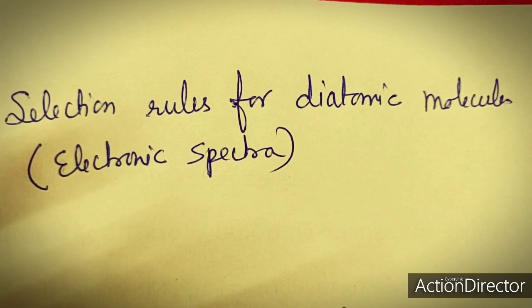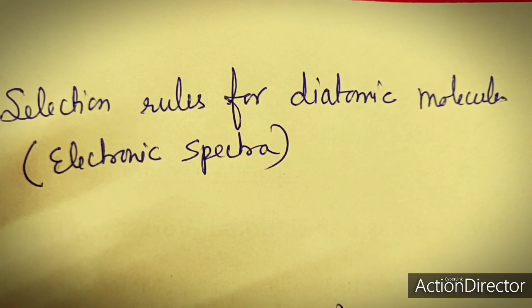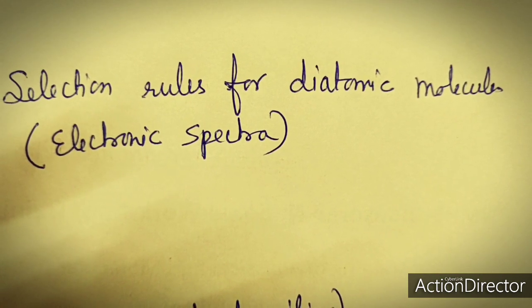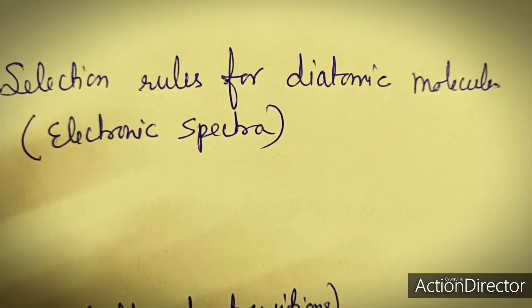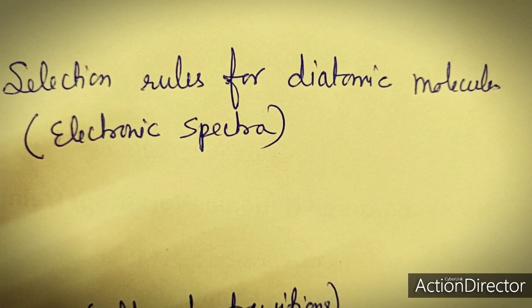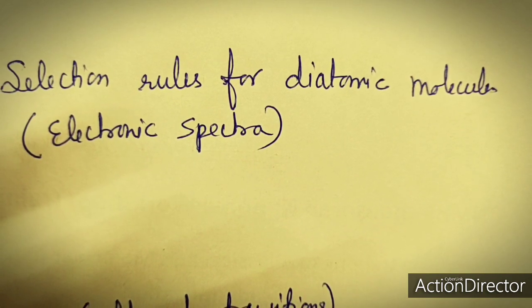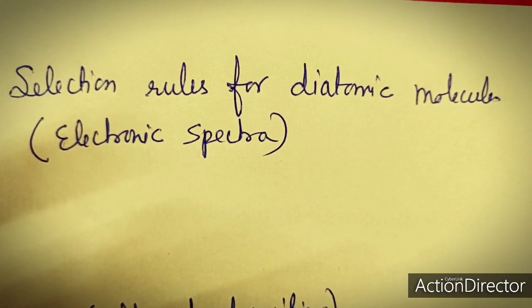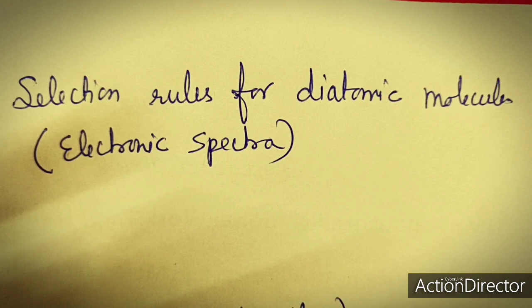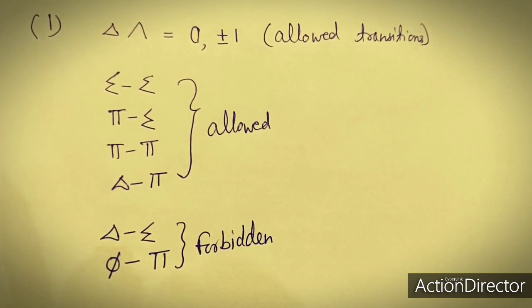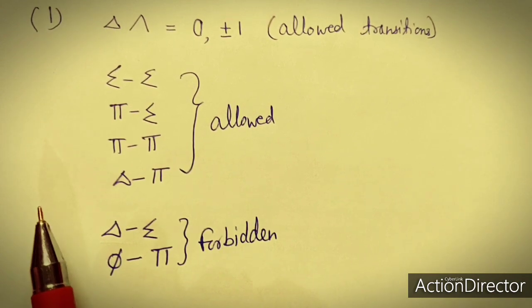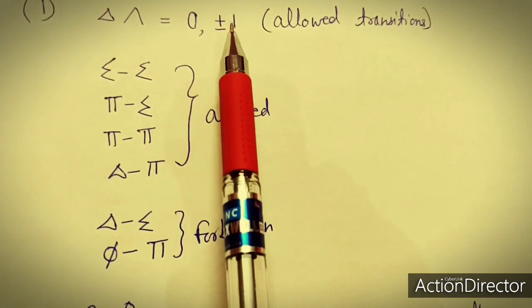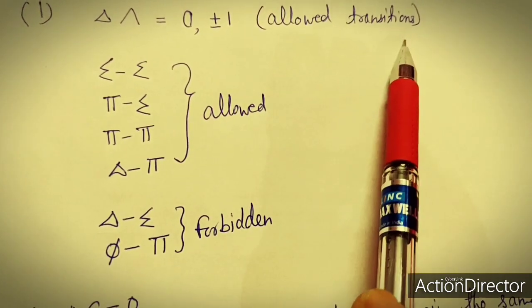Now we discuss the selection rules for electronic transitions in diatomic molecules. If transitions follow the selection rules they are allowed (intense); otherwise they are forbidden. The first rule is: ΔΛ = 0 or ±1. Transitions like sigma→sigma, pi→sigma, pi→pi, or delta→pi are allowed.